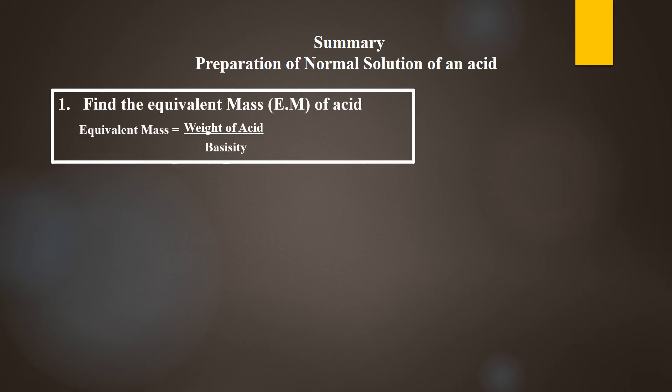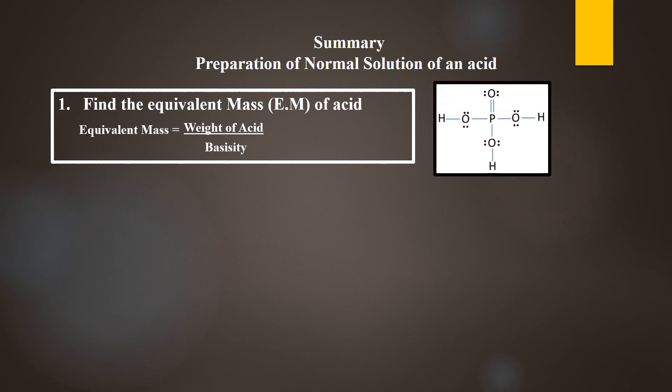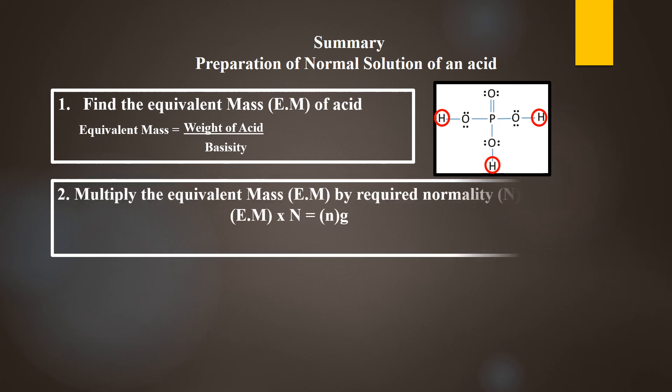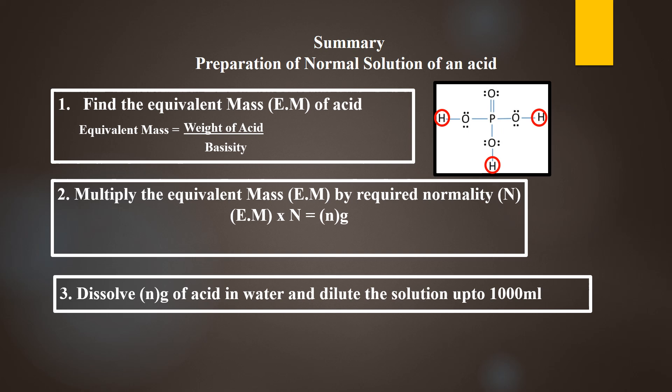Let's summarize the preparation of normal solution of acids. First, find out the equivalent mass of acid by dividing the molecular weight of the acid with its basicity, where basicity is the number of replaceable hydrogen ions. To find basicity, draw the structure of the acid and note down how many replaceable hydrogen ions are present. Then multiply the equivalent mass by the required normality, take the resulting mass of acid, dissolve it in water, and dilute the solution up to 1000 milliliters.